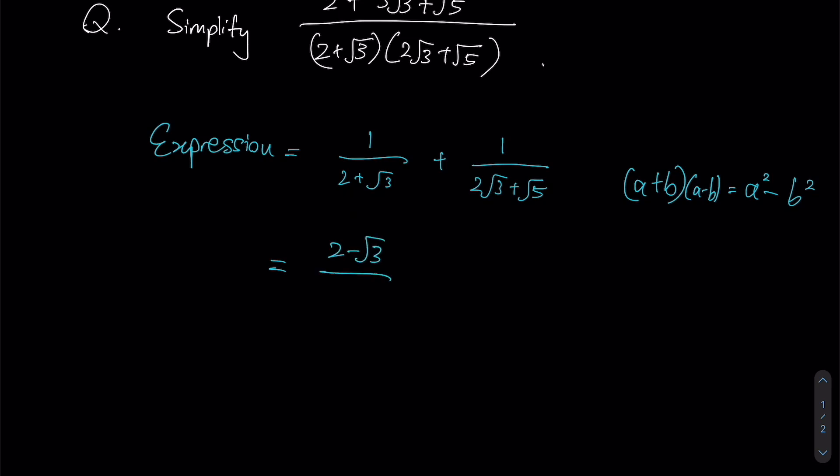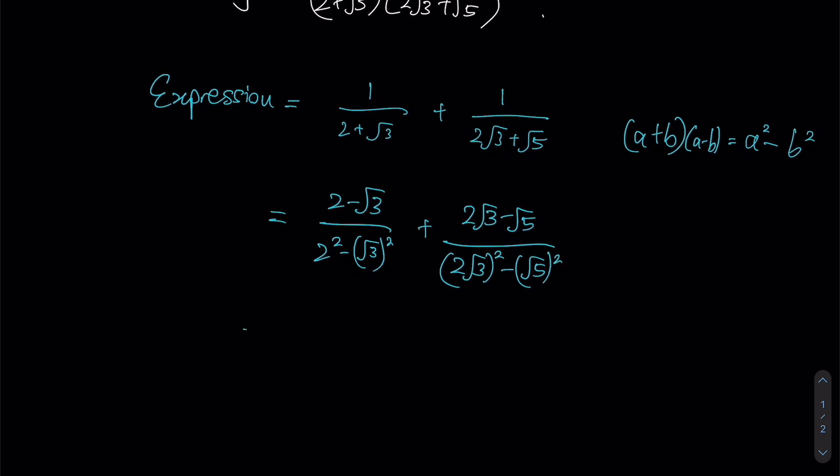so for example, my first one would be of the form 2 minus root 3 over 2 squared minus root 3 whole thing squared. The same applies to the fraction on my right. I would have 2 root 3 minus root 5 over 2 root 3 squared minus root 5 squared. Okay,